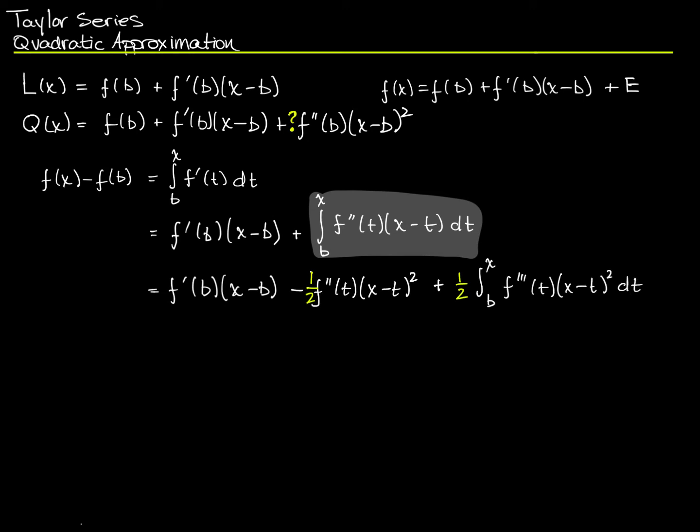First, we get -f''(t)(x-t)² times 1/2 plus 1/2 the integral from b to x of f'''(t)(x-t)²dt. The substitution that we did here was u = f''(t) and v = -1/2(x-t)². That may not be obvious, but it wasn't terribly obvious in the previous section when we did integration by parts on this first term.